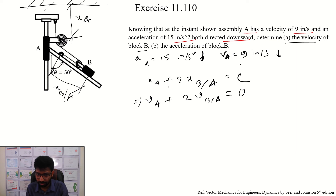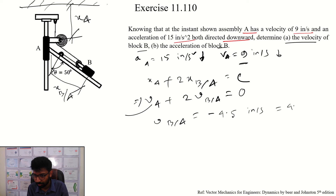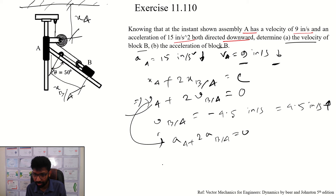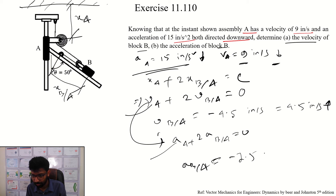So we can define v_BA. Since v_BA depends on v_A, we get v_BA equals negative v_A divided by 2, which equals 4.5 inches per second. Then for acceleration: a_A plus 2a_B with respect to A equals 0, giving a_BA equals negative 7.5.